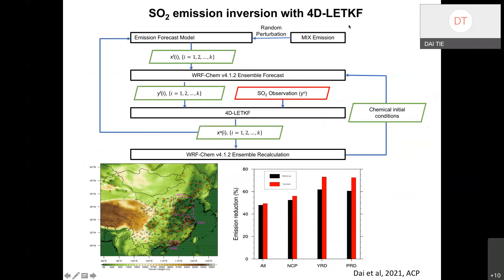We also used the assimilation system to invert SO2 emissions. Using ground-based SO2 observations over China, we find that from 2010 onward, SO2 emissions over three highly developed regions have been reduced by over 50%, especially over the Pearl River Delta region.